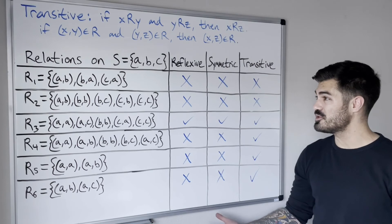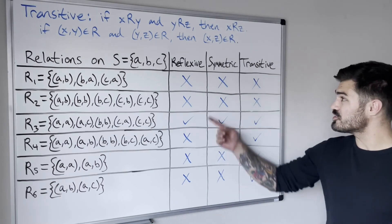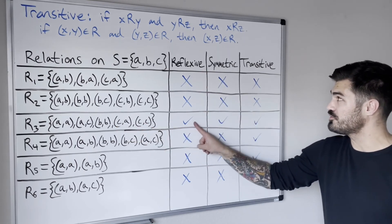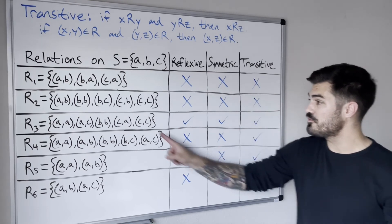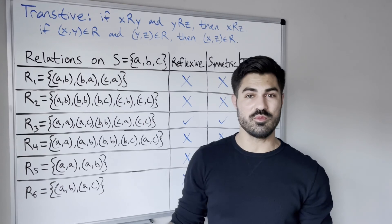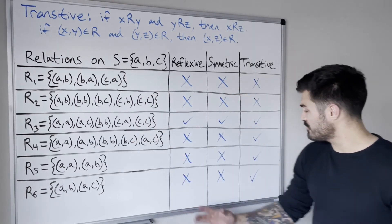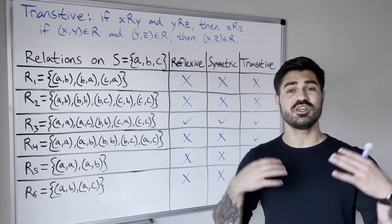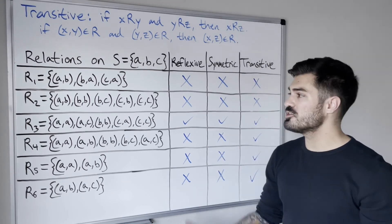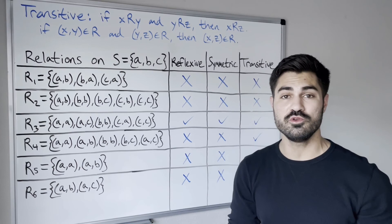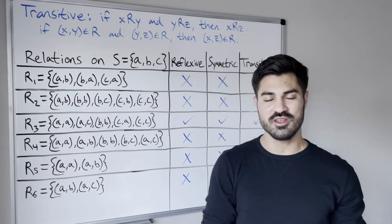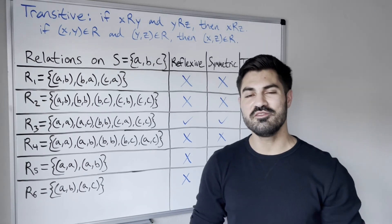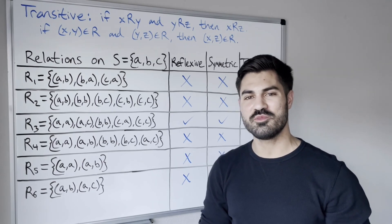Hopefully these examples helped make sense of these properties and of equivalence relations. Looking at our full results, the only relation that has all three check marks — reflexive, symmetric, and transitive — is relation three. Therefore, relation three is what we call an equivalence relation. None of the other relations qualify because they have to meet all three properties. This video is meant mostly as an introduction to define these terms and play around with examples. In future videos we'll look at how to prove a relation is an equivalence relation. If you enjoyed this video, hit like and subscribe. Keep flexing those brain muscles, and I'll see y'all later.